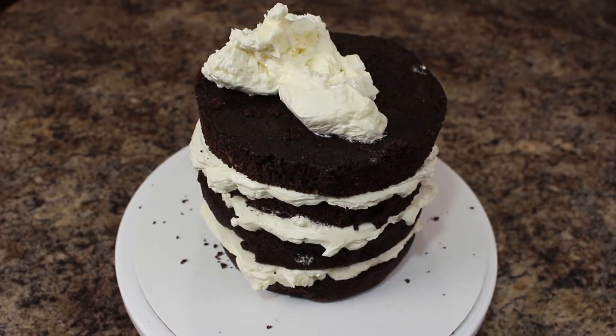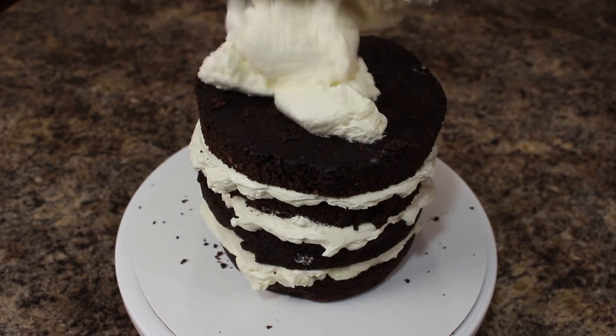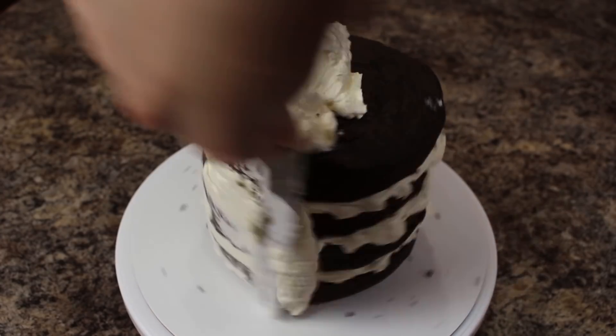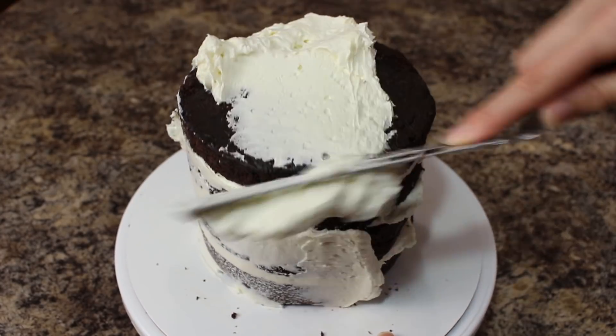Once my cake is stacked up, I'm going to apply a thin layer of my buttercream all around the outside for a crumb coat and then that's going in the fridge for about 25 minutes to chill.